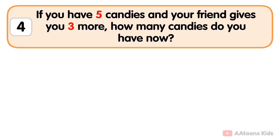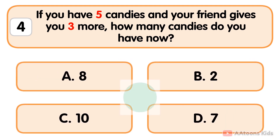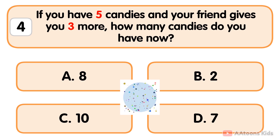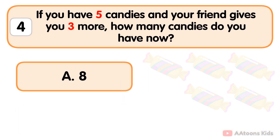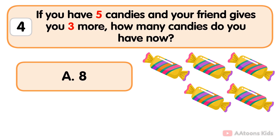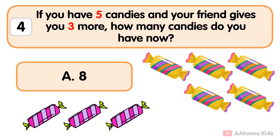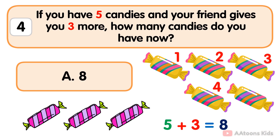If you have five candies and your friend gives you three more, how many candies do you have now? Eight. You have five candies, your friend gives you three candies. Add five and three and you will get eight. Now count: one, two, three, four, five, six, seven, eight.